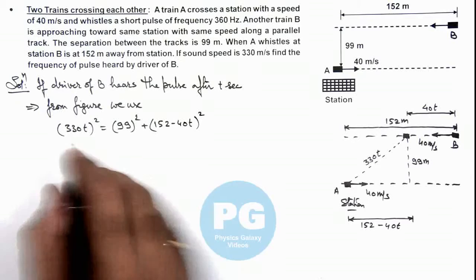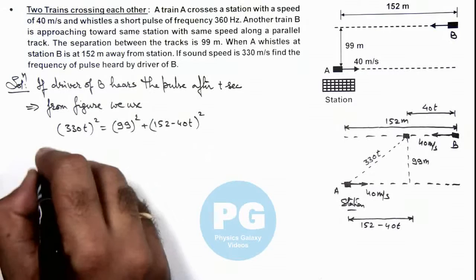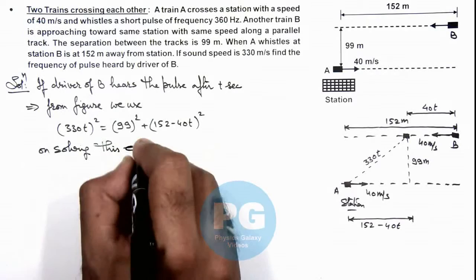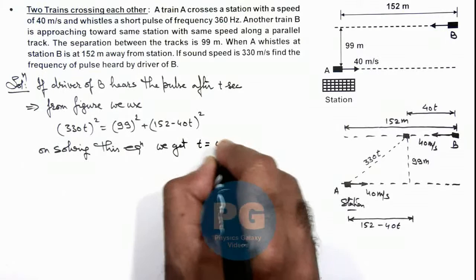Now I leave it as an exercise for you to solve this quadratic equation. On solving this equation, I am directly using the result: the value of t is equal to 0.5 seconds.